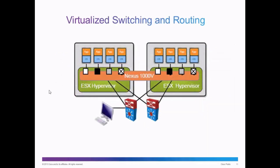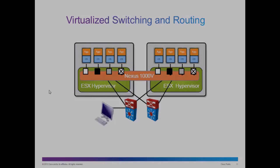In addition to virtual computing, we can also virtualize switching and routing. In this slide, we can see two VMware ESXi hypervisors. The virtual computers are all networked together with a Cisco Nexus 1000v virtual switch. The virtual switch brings the power of a Cisco switch to the virtualized network environment.